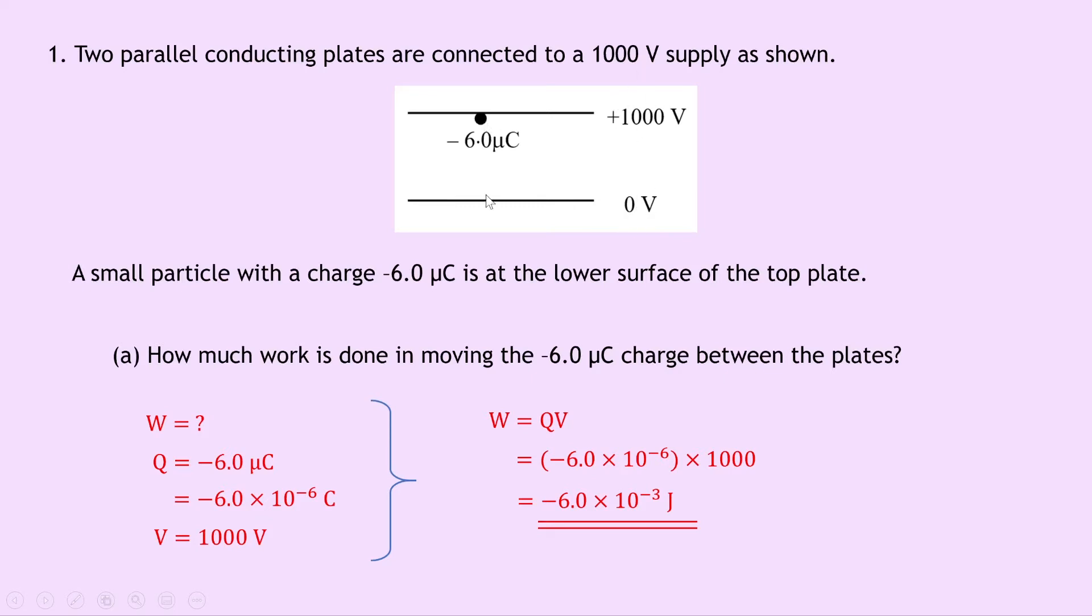So when the negative charge is at the bottom plate, it will want to be repelled away from the bottom plate and attracted towards the top plate. So at this point on the bottom plate, work will have been done to get it to that point where the work done is stored as electrical potential energy.